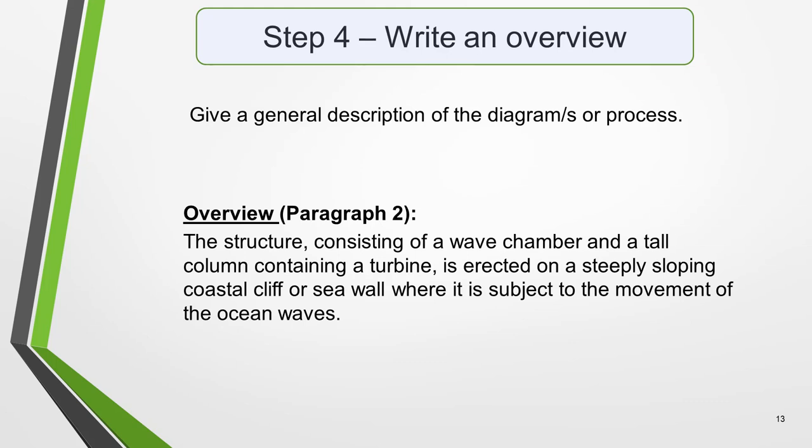In the second paragraph, you should give a general description of the diagram or the process. The detail comes later in the essay. State the information simply using synonyms where possible. No elaborate vocabulary or grammar structures are required, just the appropriate words and correct verb tenses. For example, the structure, consisting of a wave chamber and a tall column containing a turbine, is erected on a steeply sloping coastal cliff or sea wall, where it is subject to the movement of the ocean waves.